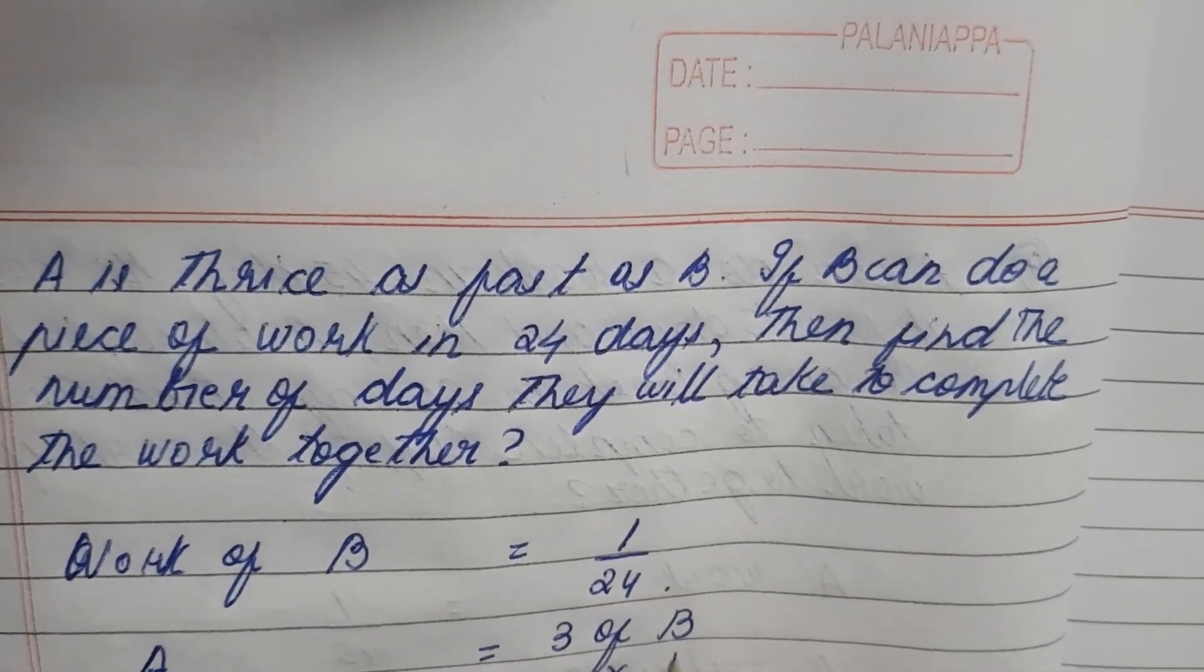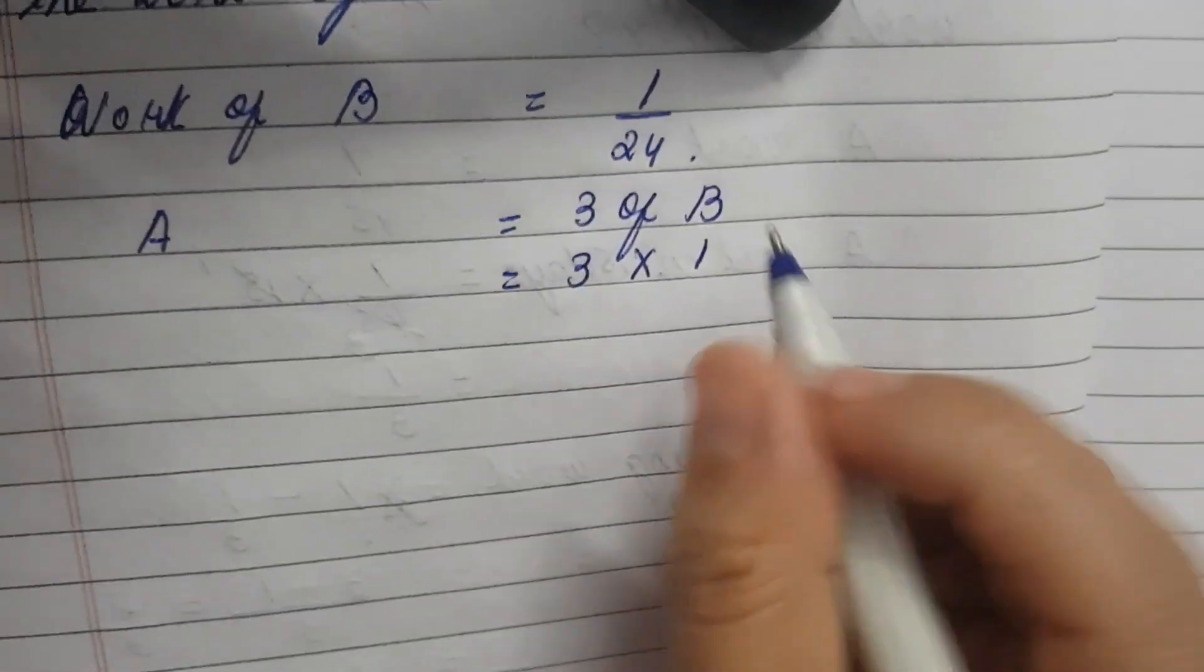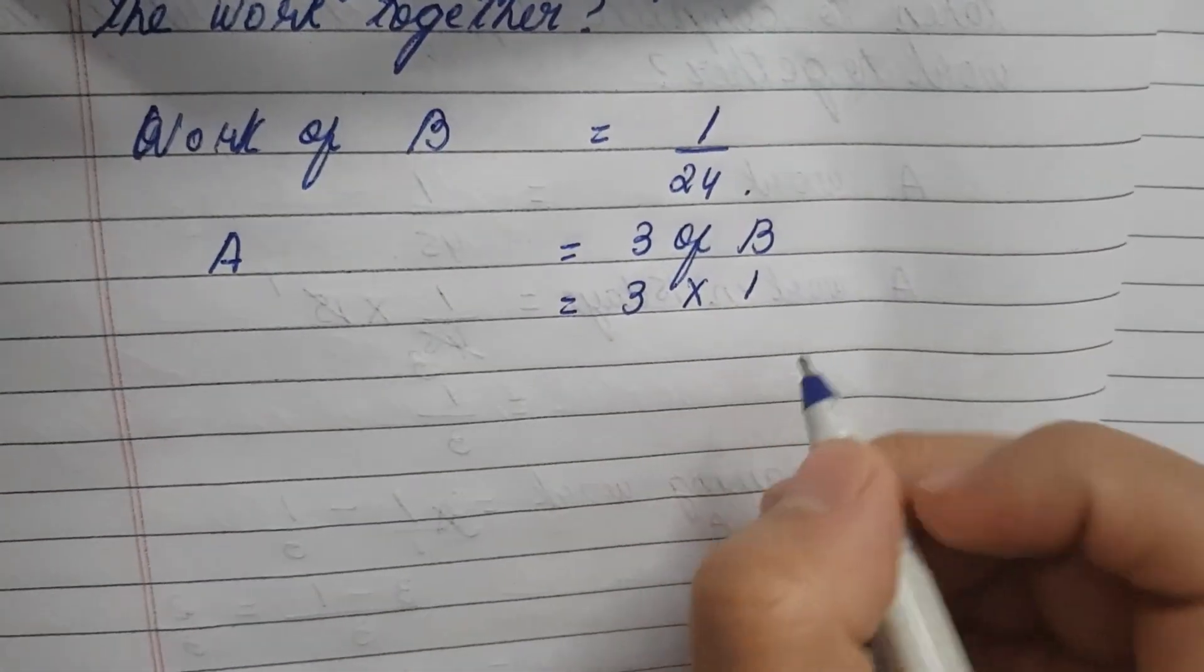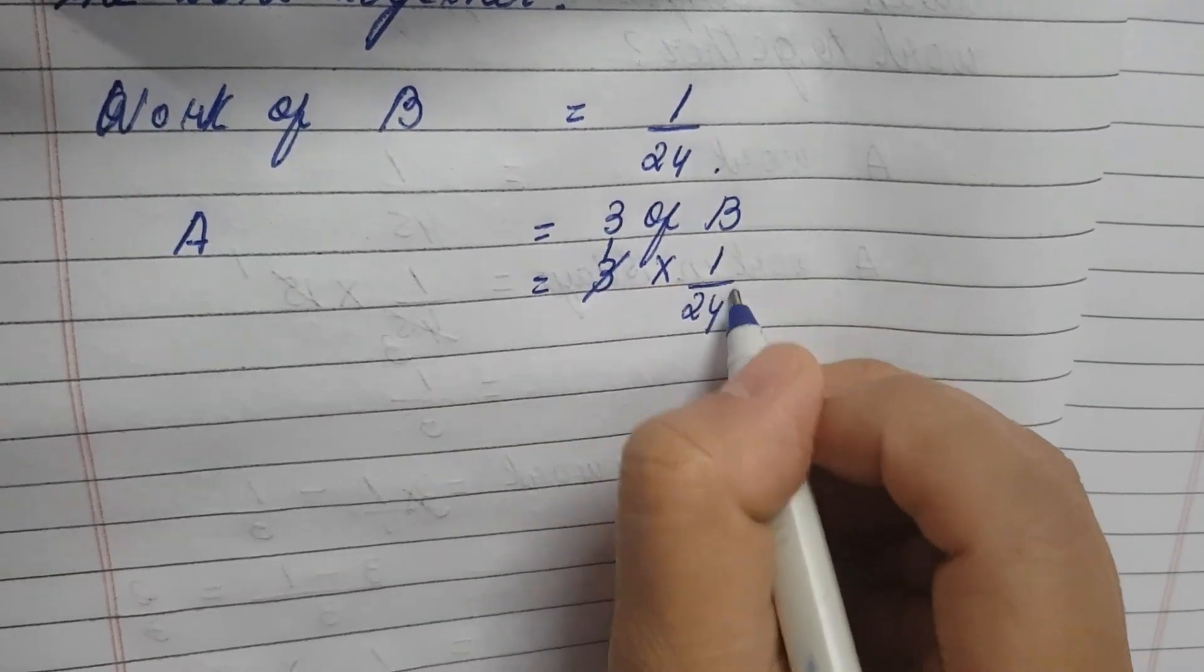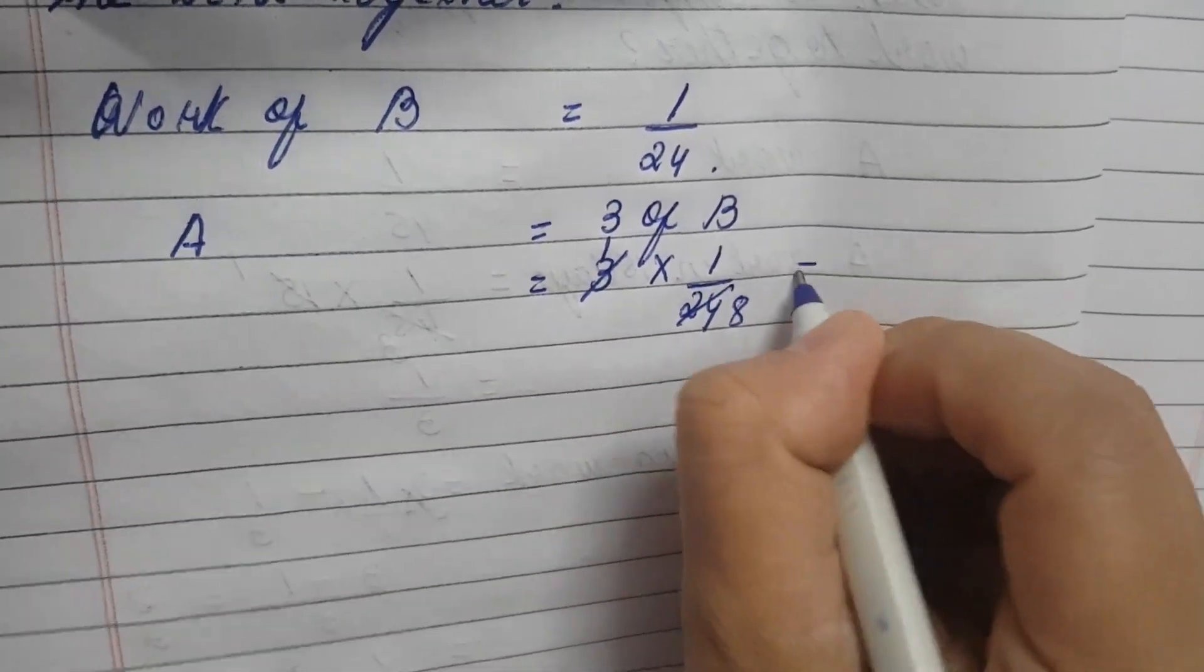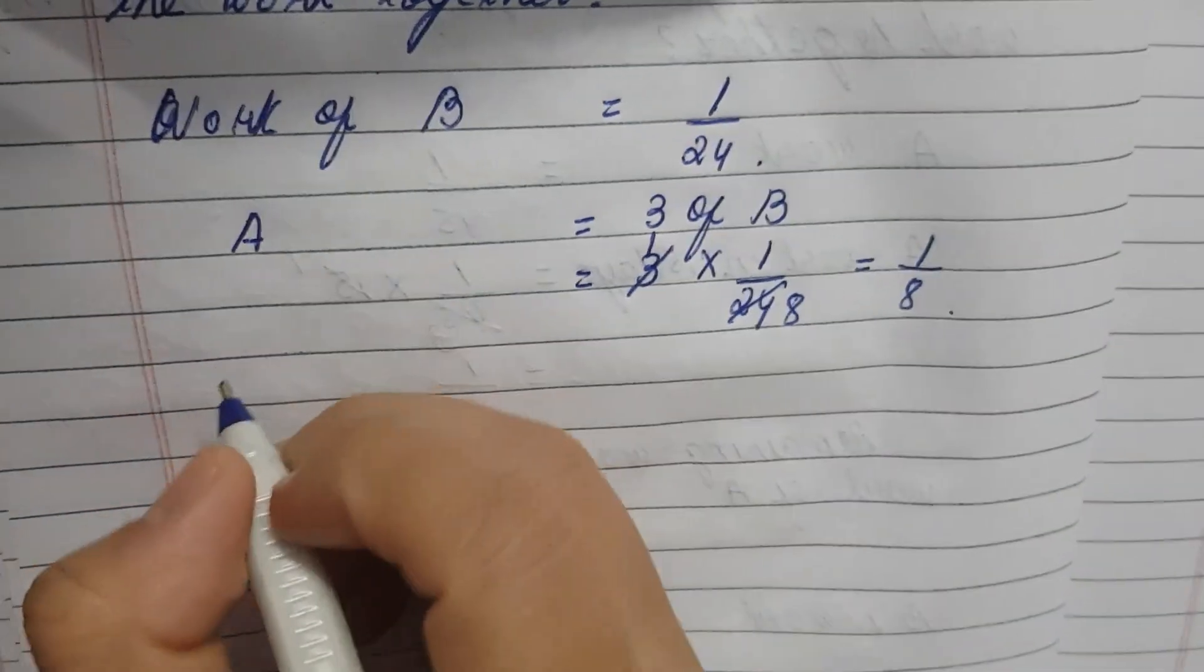3 into 1, 3 times of B. 3 into 1 by 24. 3 1 time, 3 8 times 24, so he will complete the work in 8 days.